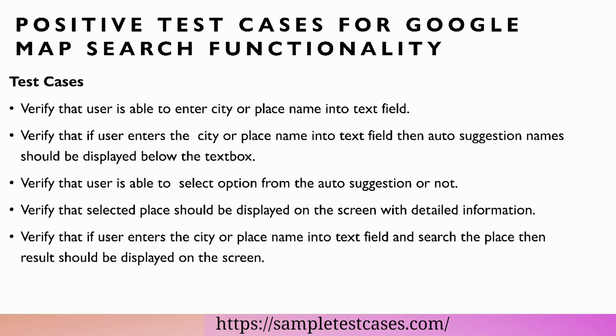Positive test cases for Google Map Search Functionality. Test cases: Verify that user is able to enter city or place name into the text field. Verify that if user enters the city or place name into the text field then auto-suggestion names should be displayed below the text box. Verify that user is able to select an option from the auto-suggestion or not.